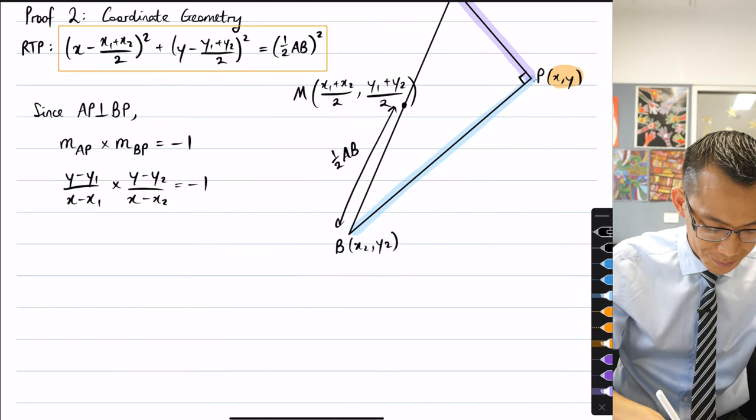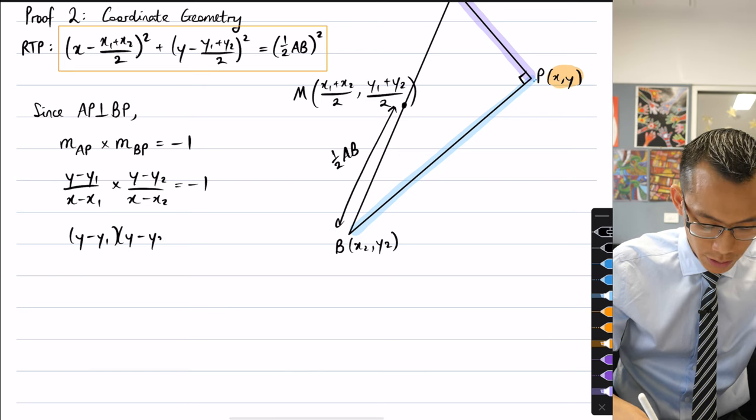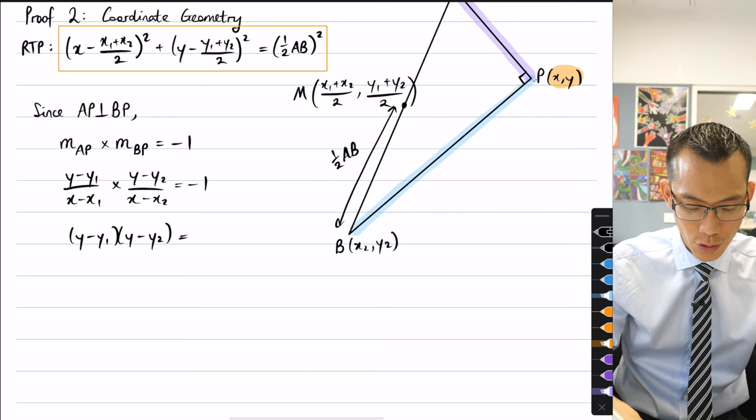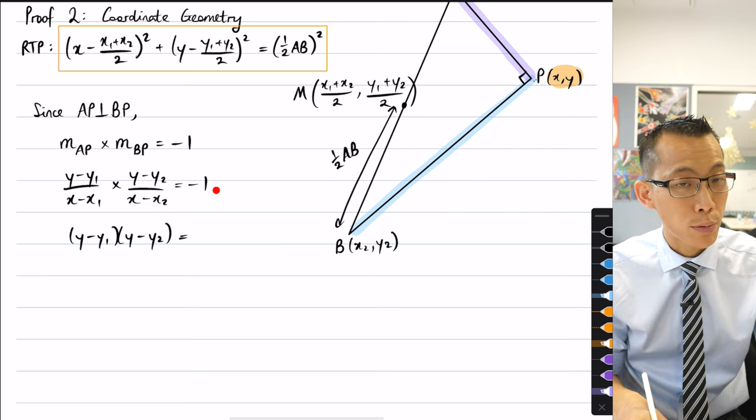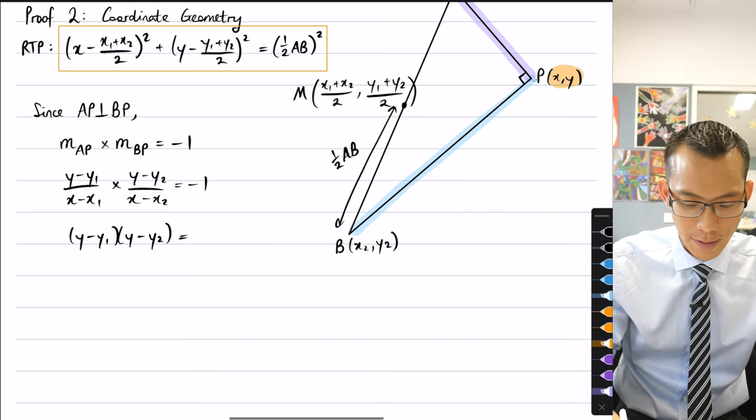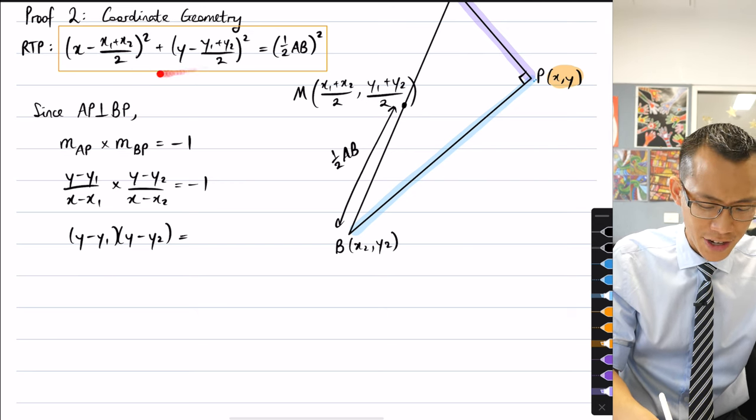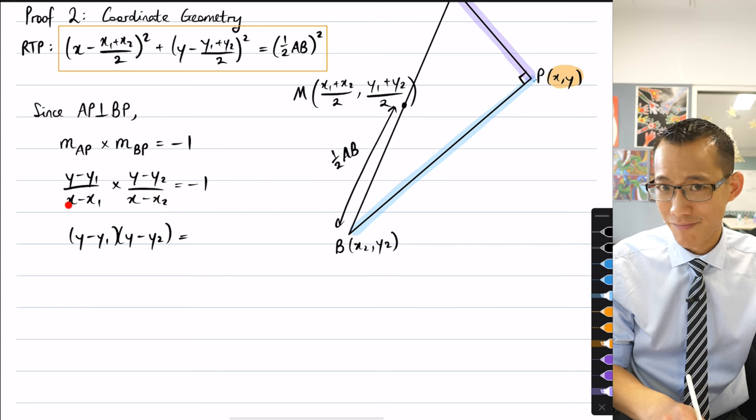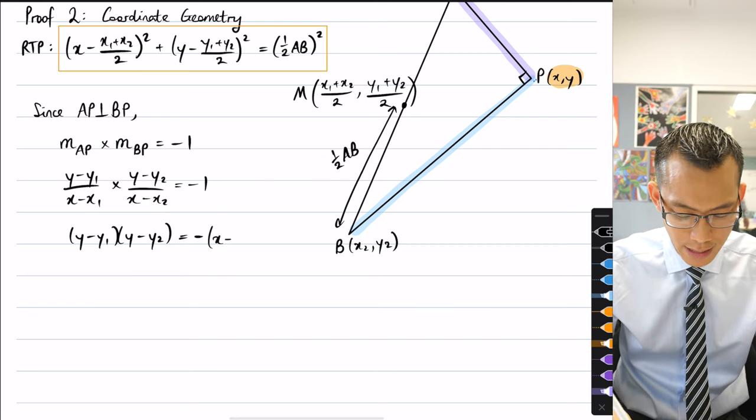You can see here I've got (y minus y1) and (y minus y2) up on the numerator, and I can make this a bit easier for me to deal with if I take this (x minus x1) and the (x minus x2) multiplied across the other side so I don't have as many fractions. I mean, we're not going to escape the fractions, but these fractions at least are constant, whereas these fractions here I've got actual variables flying around there.